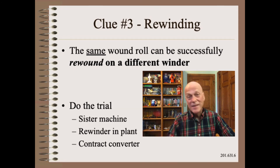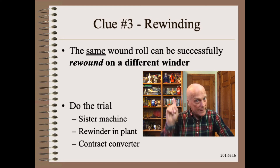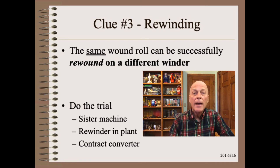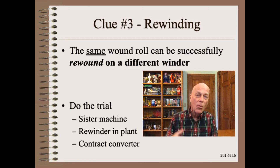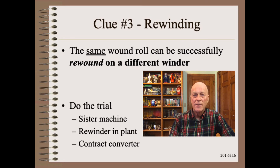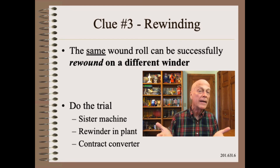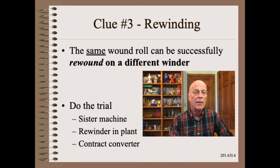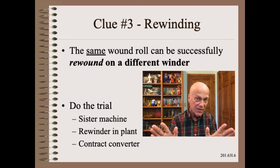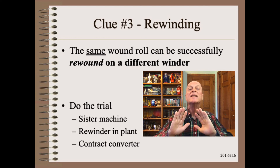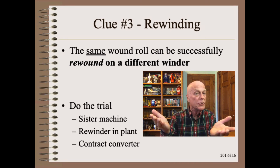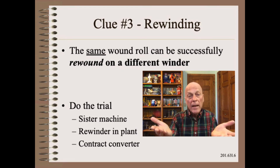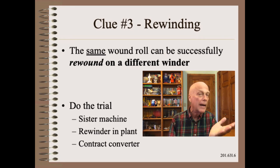The third clue is also quite simple: see if the exact same wound roll can be successfully rewound on a different winder — any winder, make, model, or settings anywhere in the world will suffice for this trial. Any winder that can manage that rewind and make an acceptable wound roll means that the problem is a winding problem. If no winder can successfully rewind the product, then the problem is a product process design issue. So find a winder — perhaps a rewinder in your own plant. If you don't have a good candidate winder in your own plant, ship the troubled roll to a sister plant or to a contract converter.